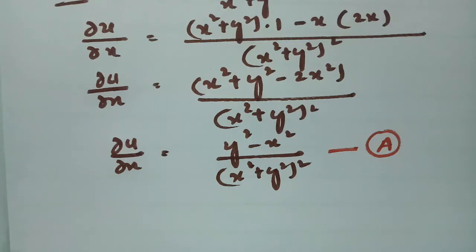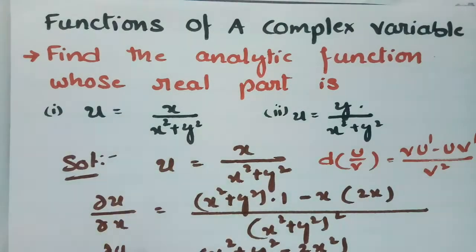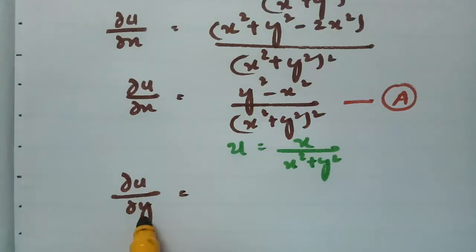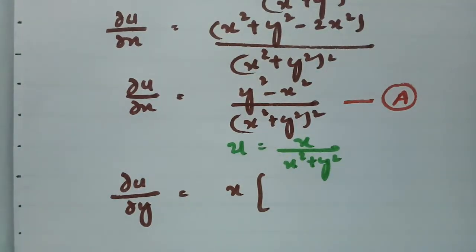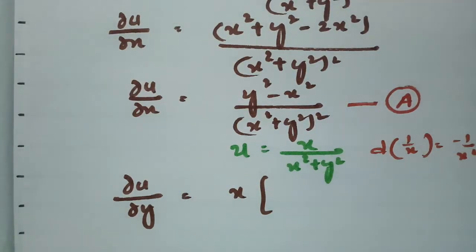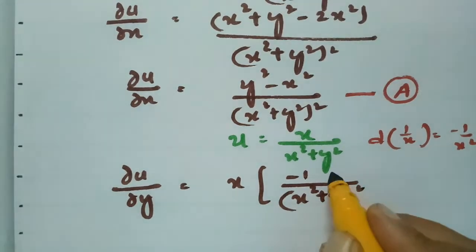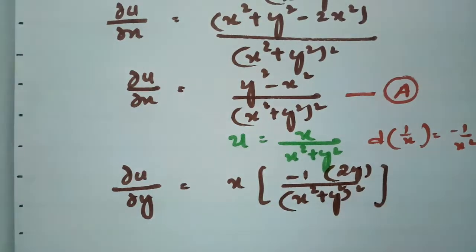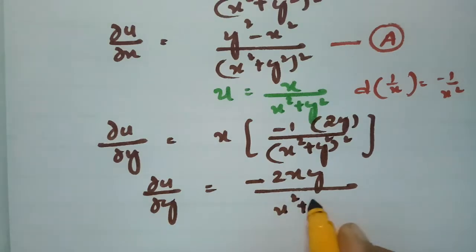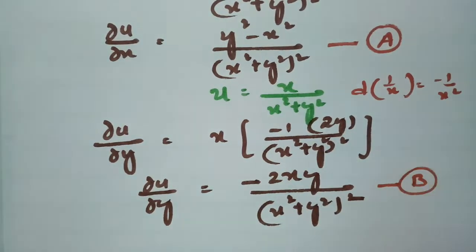Next, u is given as x/(x²+y²). Now I am going to differentiate with respect to y. With respect to y, x is constant. Using the rule that the derivative of 1/x is -1/x², differentiating (x²+y²) with respect to y gives 2y. So ∂u/∂y equals -2xy / (x²+y²)². This is equation (b).